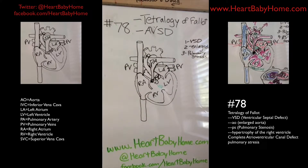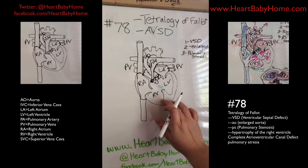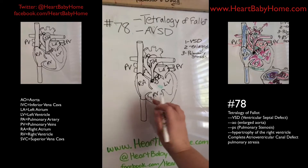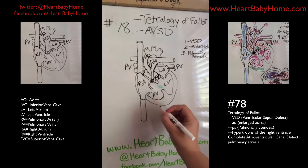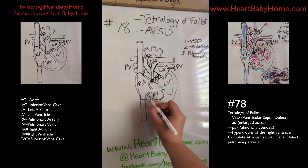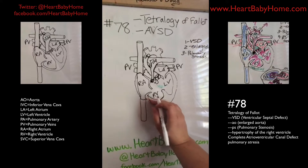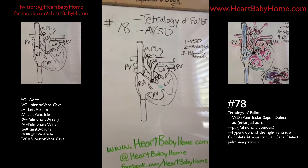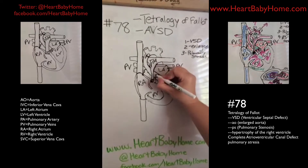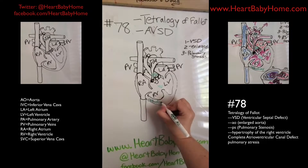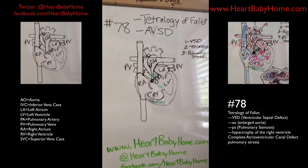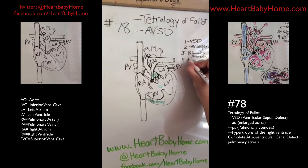The fourth thing in Tetralogy of Fallot is that the right ventricle has hypertrophy — that's when the muscle gets larger because it's overworked. The muscle is actually the wall, so the right ventricle will get a little bit smaller, but not enough to be hypoplastic usually. So we have pulmonary stenosis, an enlarged aorta, and right ventricle hypertrophy.